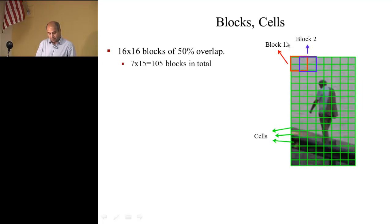Here we will have 15 blocks: first block here, then second block will start here, third, fourth, fifth, and you count them, be 15 of those. Now each block is 2x2, so therefore, since it's 16x16, each cell will be 8x8.